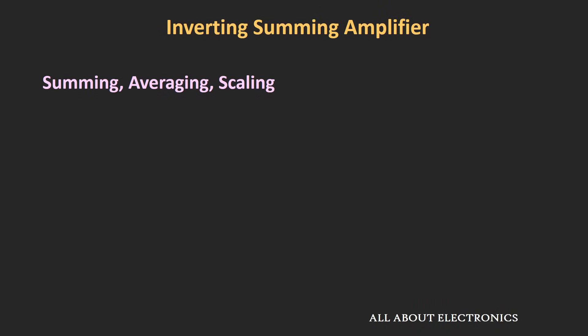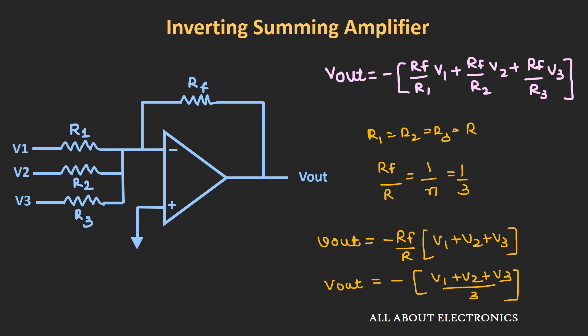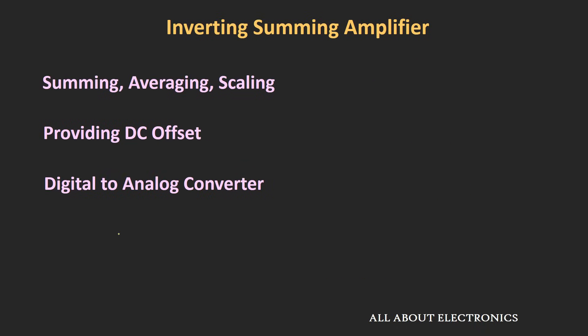This inverting summing amplifier can be used for addition, averaging, and scaling. Apart from that, it can also provide a DC offset to input signals — for example, if inputs are AC signals from a sensor and you need to apply a DC offset. Additionally, it can be used for digital-to-analog conversion and for mixing different audio signals.